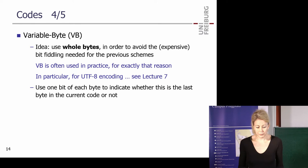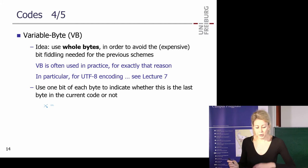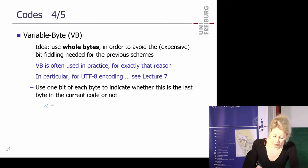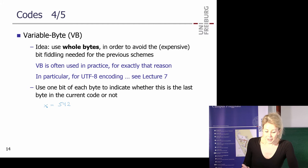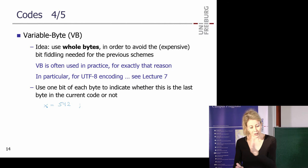Variable byte example: encode x=542 using two bytes. 542 in binary requires more than 7 bits, so one byte isn't enough but two bytes should work. Each byte has 7 data bits and 1 flag bit. First byte flag: '0' (more bytes come). Second byte flag: '1' (last byte). We need to split 542 into two 7-bit groups.